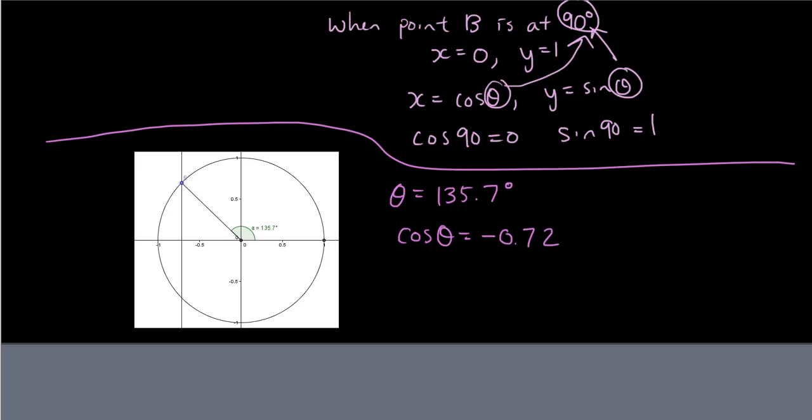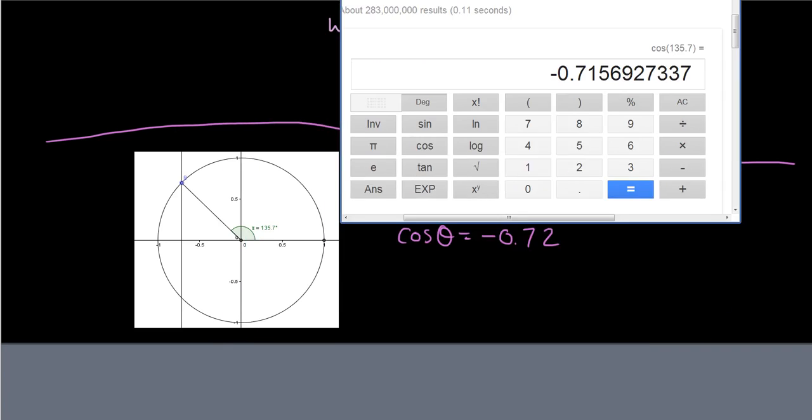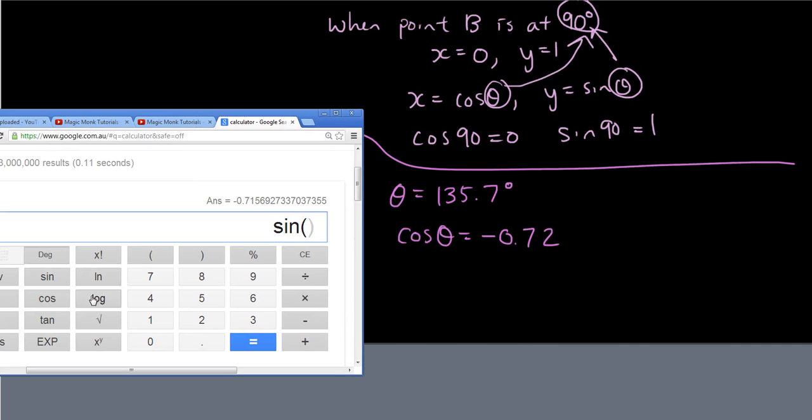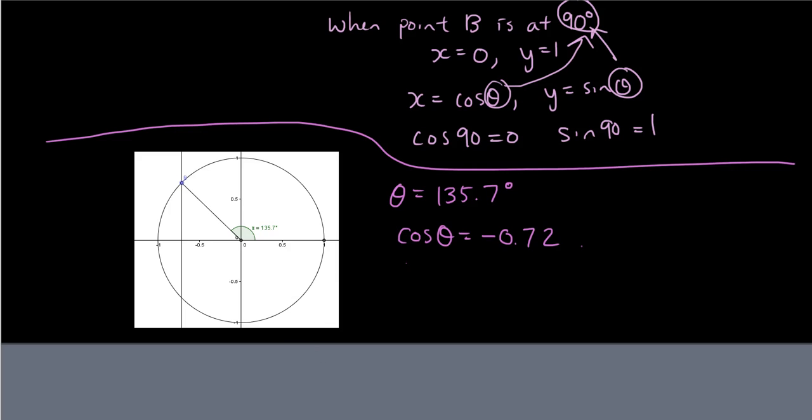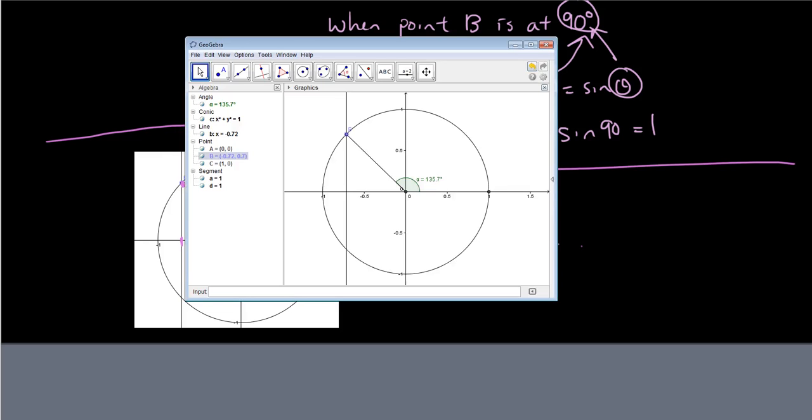and let's try putting in sine, sine 135.7. Remember your calculator should be on degrees mode for this to work. 0.70 so sine theta is 0.70. I've rounded these numbers to two decimal places. Now let's look at for point B what is the x-coordinate and what is the y-coordinate.